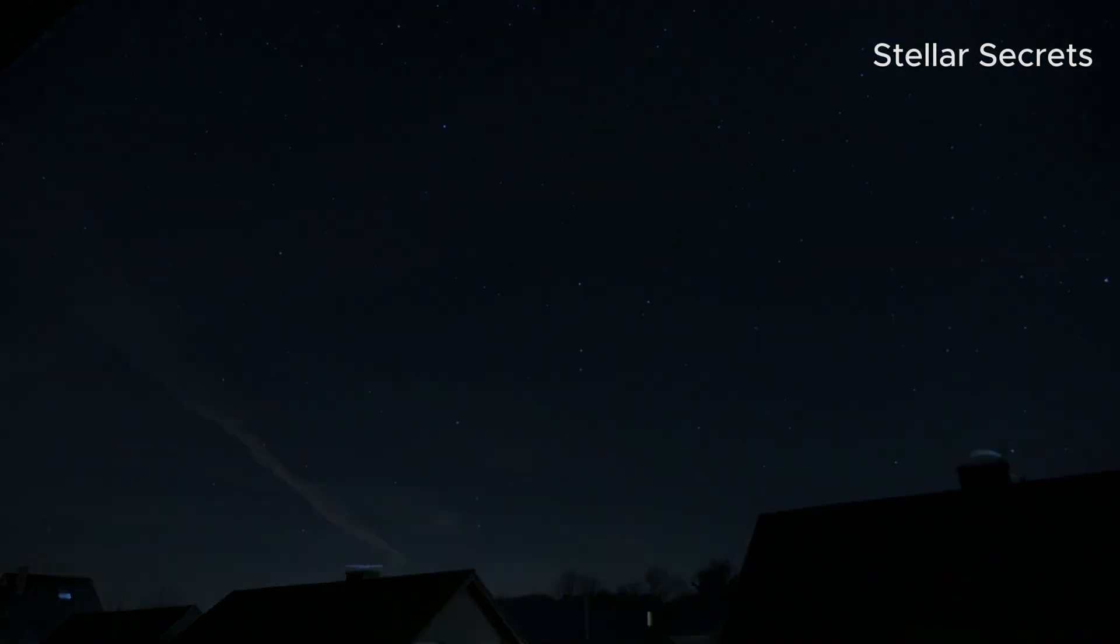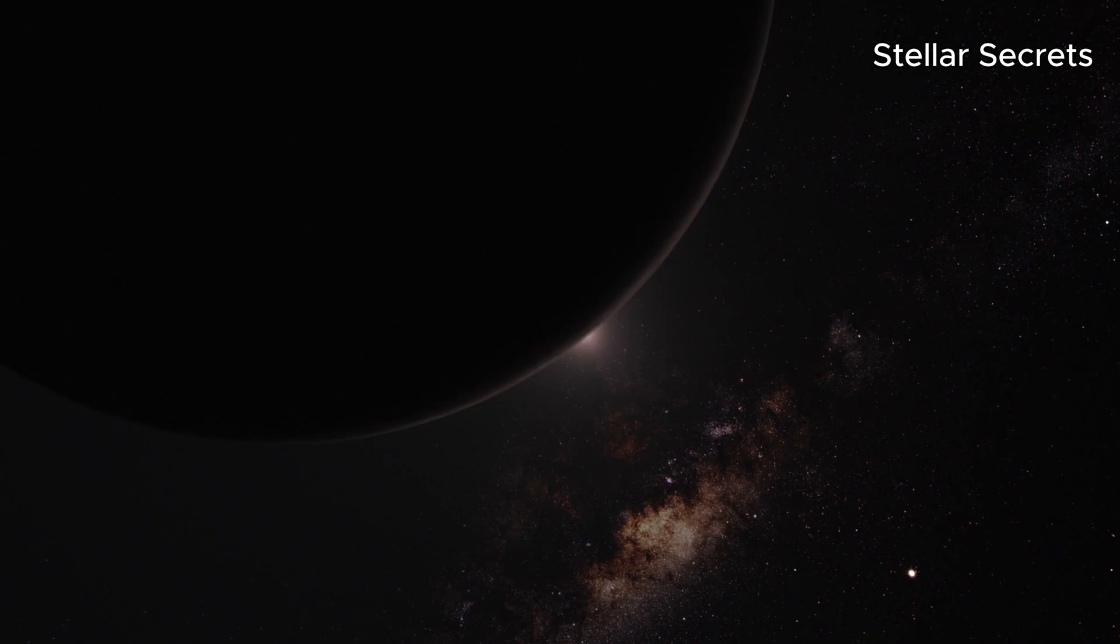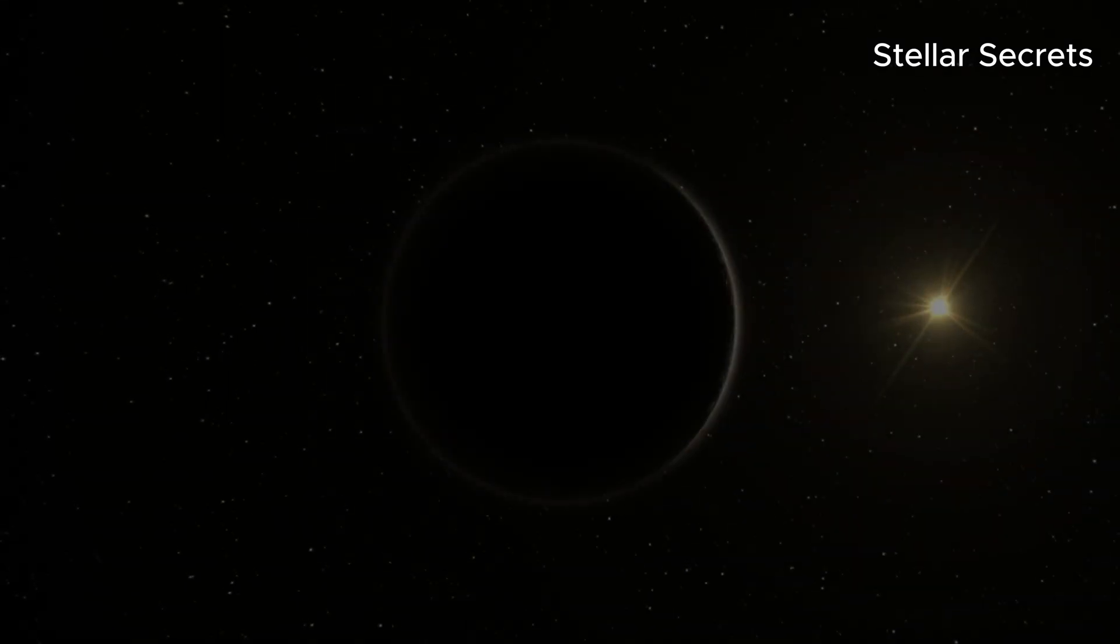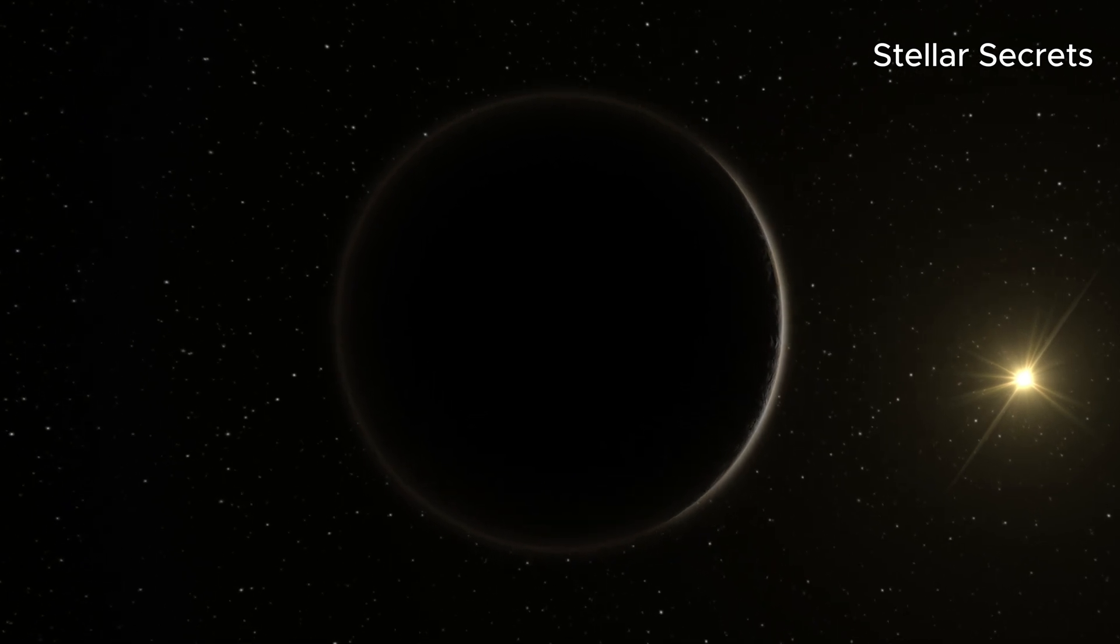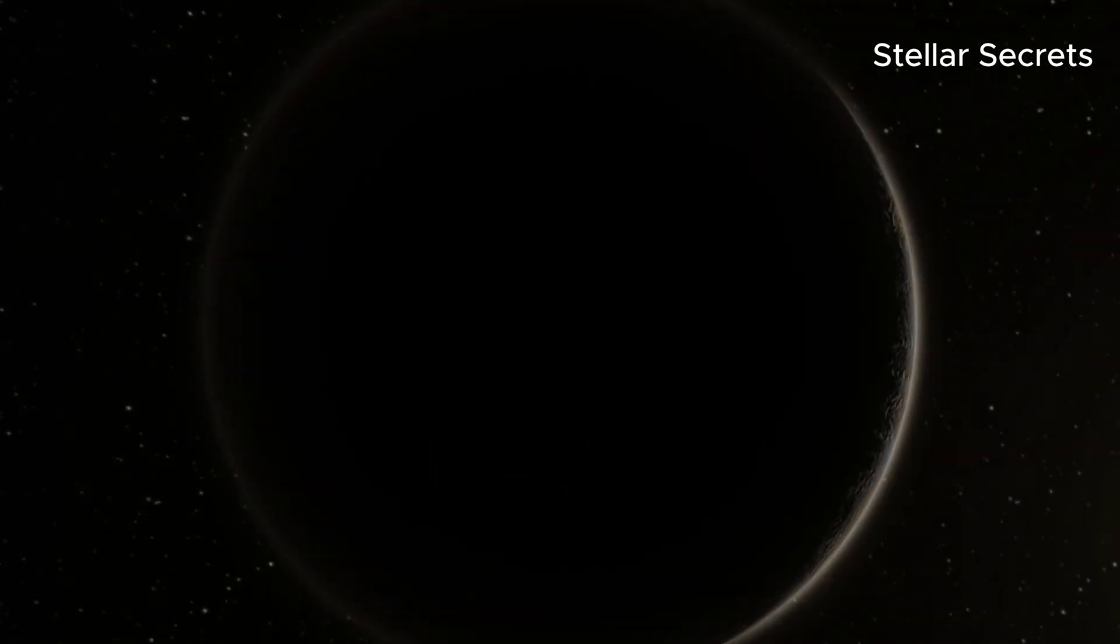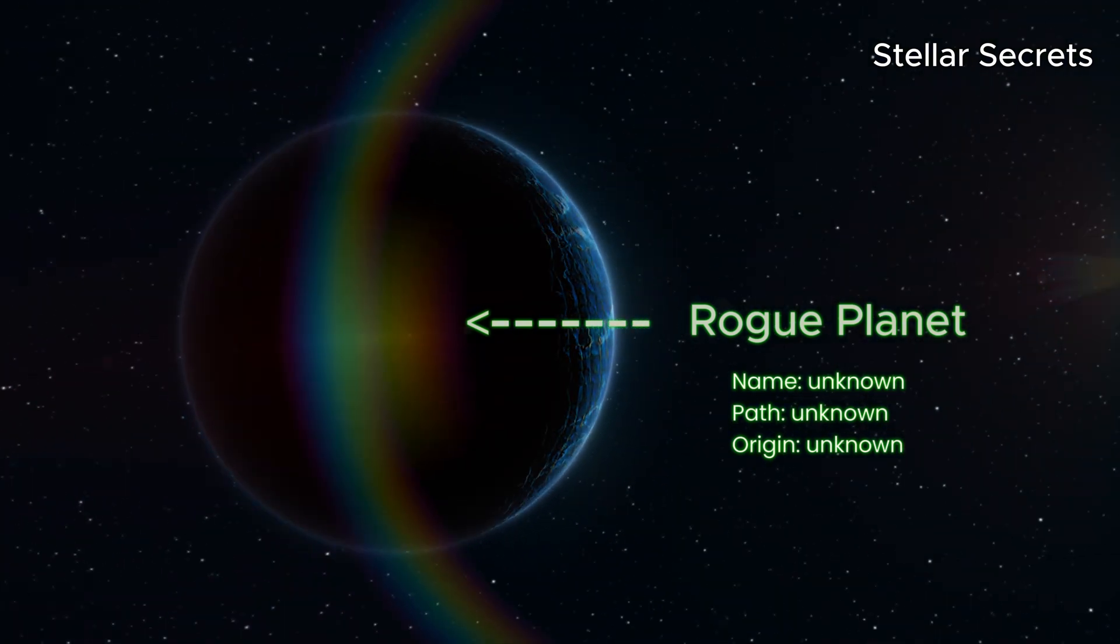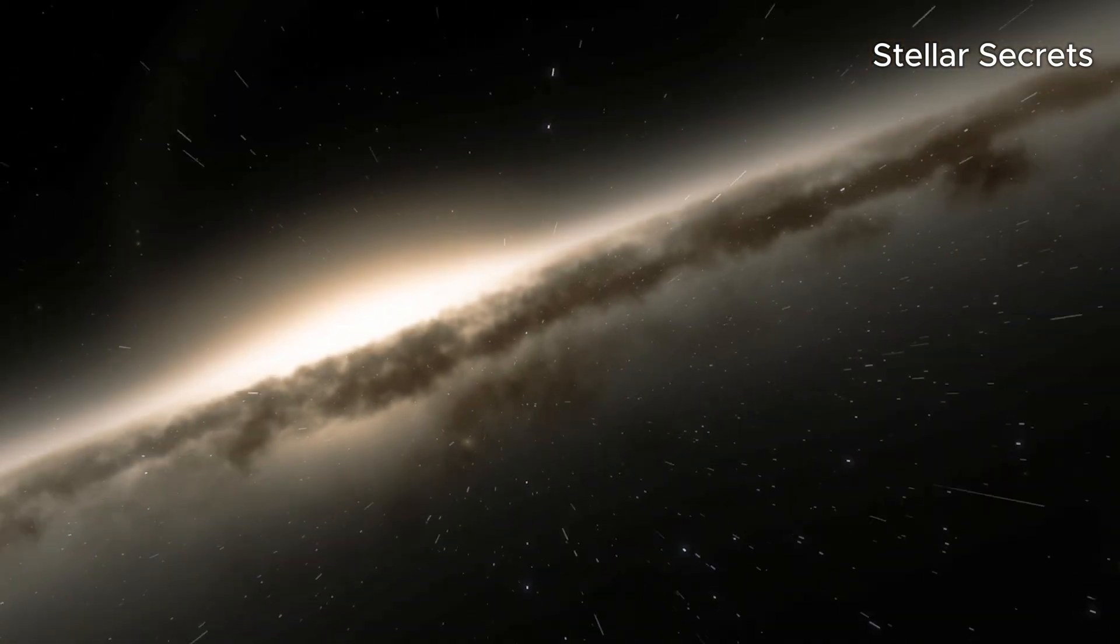Have you ever imagined a giant planet wandering freely in our universe? Yes, it could be possible. Such planets are known as rogue planets, and they travel through the galaxies randomly on unknown paths.